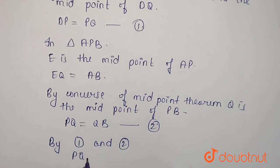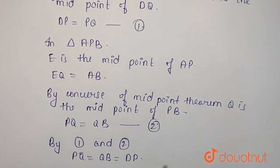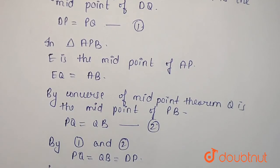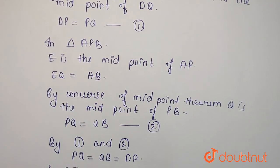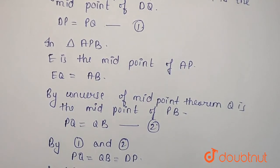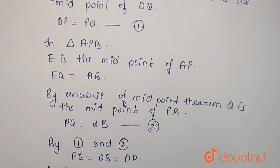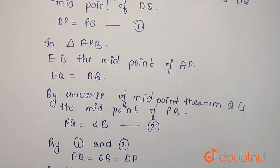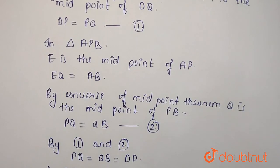By equations 1 and 2, PQ is equal to QB is equal to DP. Therefore AF and EC trisect BD.